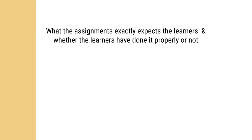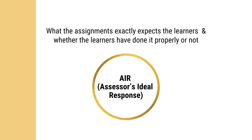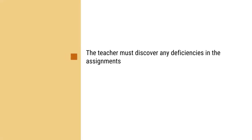Teachers can really help the learners grow into independent, self-learning and autonomous learners. They can do this by first understanding what the assignment exactly expects from the learners and whether the learners have done it properly or not. While doing this, they can prepare an assessor's ideal response, and they must use this AIR — assessor's ideal response — as the standard while evaluating the responses of the learners. Then they must discover the deficiencies of the assignments and whether the assignments have been properly planned or not.